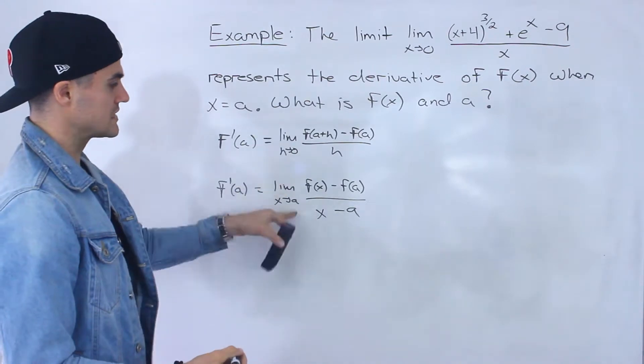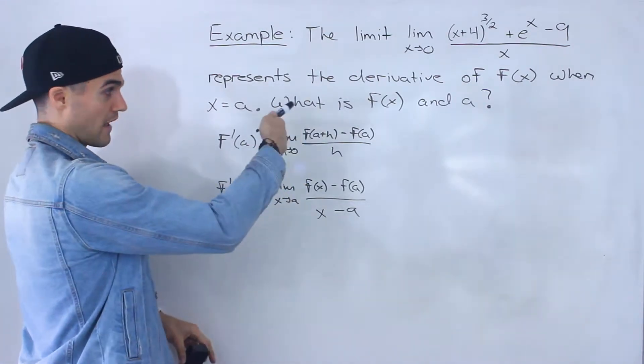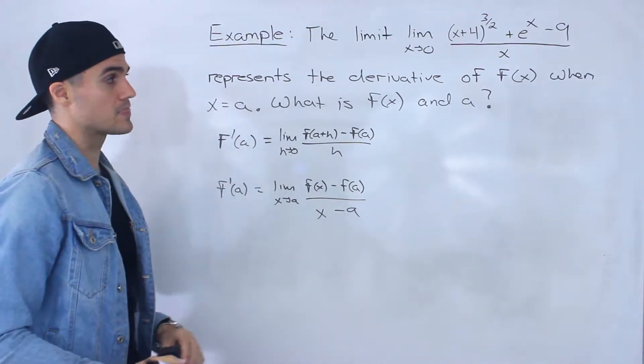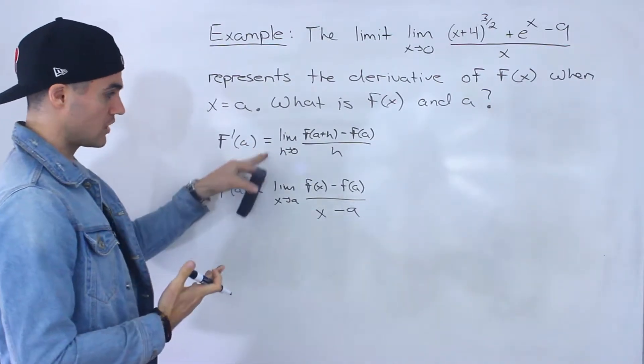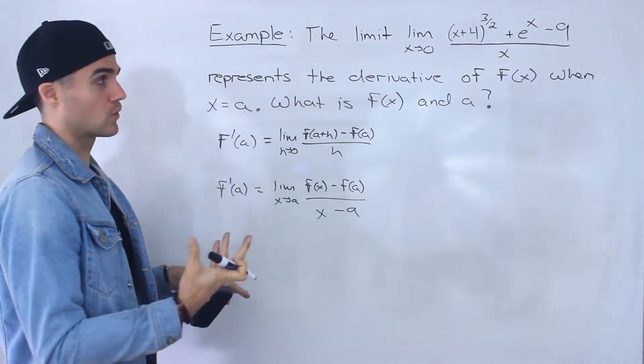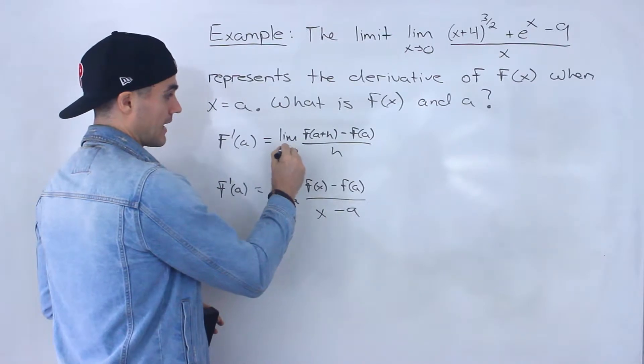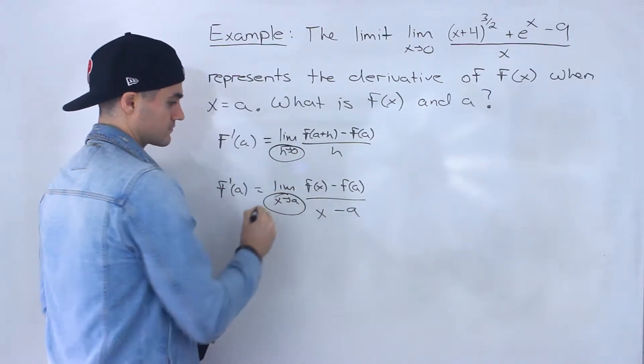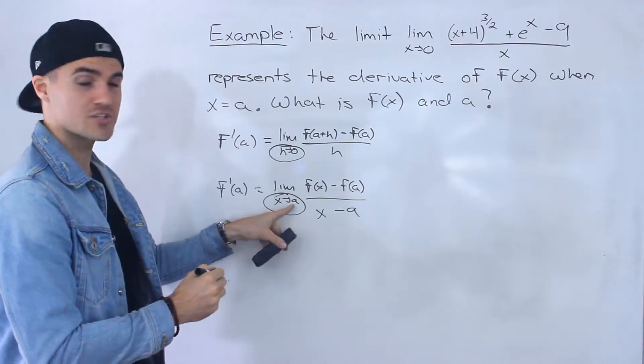Either of these limits here is going to give you f'(a), the derivative of f(x) when x equals a. So the first step in a question like this is actually figuring out which of these definitions you're working with. The easiest way to see that is to check: do you have the limit as h approaches 0 or the limit as x approaches some kind of number?